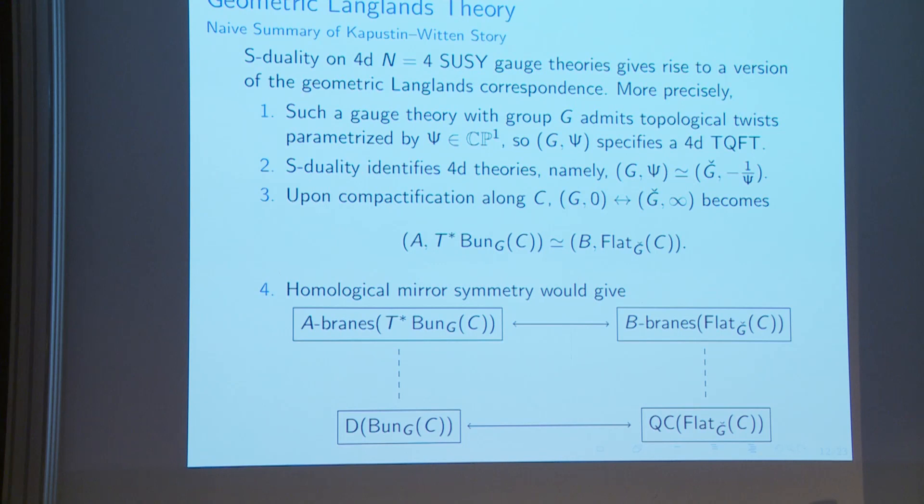Of course mathematically many parts are missing. Perhaps most importantly, the dependence on C in this framework is topological, whereas geometric Langlands really cares about the complex or algebraic structure of C. I'll say more about that later.